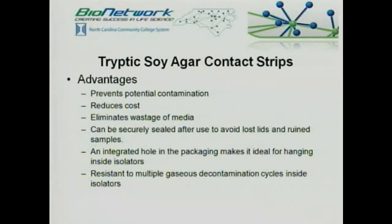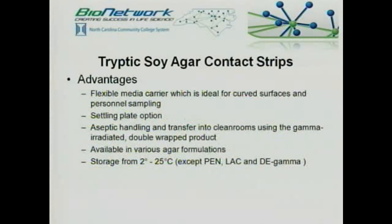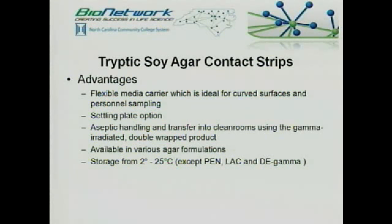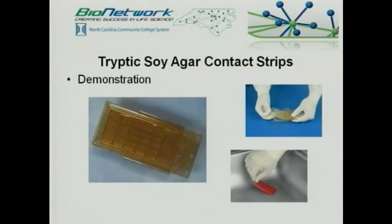They're securely sealed after use so there's no risk of dropping a plate or cross-contaminating lids. They have an integrated hole in the package for hanging in an isolator environment. They're resistant to gas decontamination cycles used in isolators. They're flexible for curved surfaces and can be used along the inside of rounded vessels. They can also serve as settling plates by turning the agar side facing up. Since they're gamma-radiated and sterile, decontaminating just the outside makes them ideal for transfer into clean rooms. Available in different formulations, stored at room temperature up to 25 degrees Celsius.